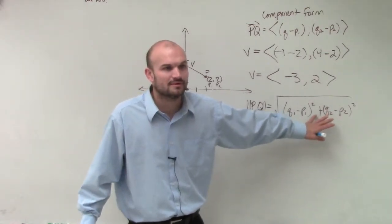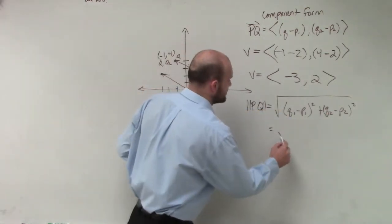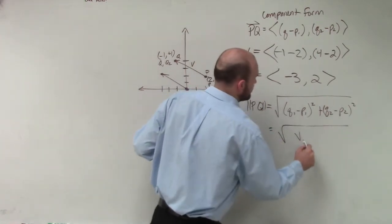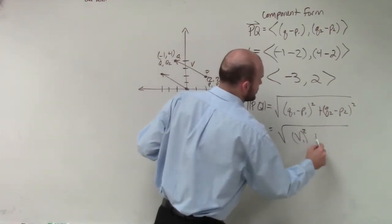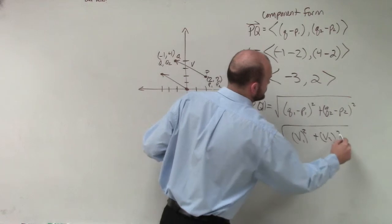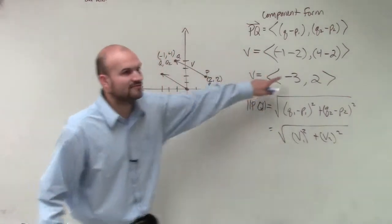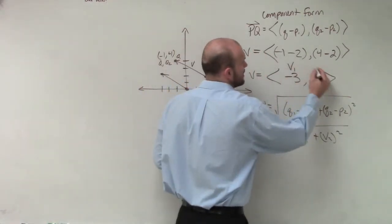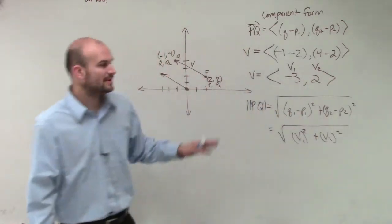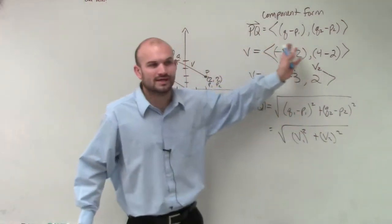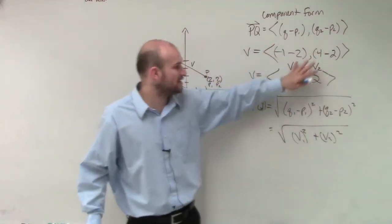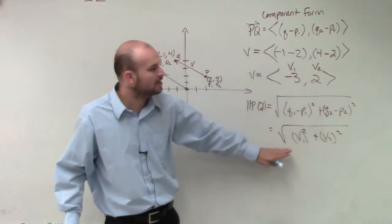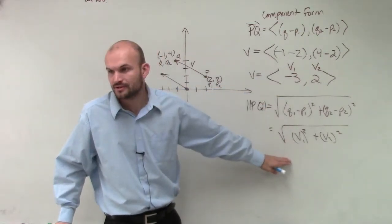By going back to our component form. So this is really the same thing as V1 squared plus V2 squared. And we know what V1 is and we know what V2 is. So we don't have to go back through this whole work again to be able to find it. Once we already know what it is in component form, we can quickly find the magnitude, right?